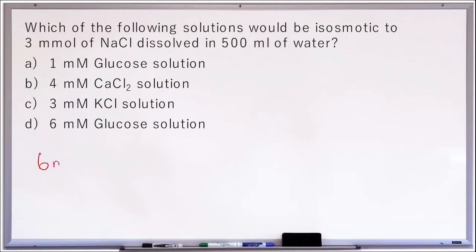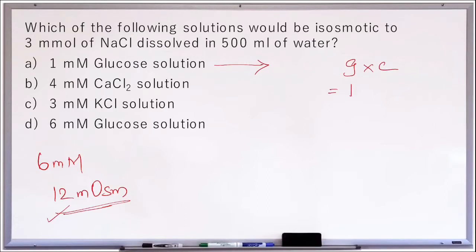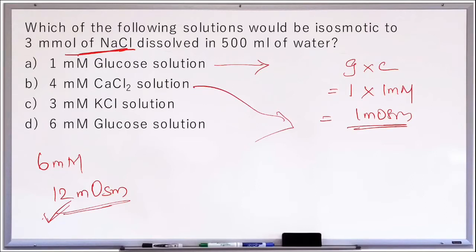The given solution is 6 millimolar with 12 milliosmoles strength. Now let's calculate the strength of all solutions. For 1 millimolar glucose: glucose does not dissociate, so G = 1, and 1 into 1 millimolar gives 1 milliosmole — hyposmotic compared to 12. For 4 millimolar calcium chloride: calcium chloride dissociates into 3 particles, so 3 into 4 gives 12 milliosmoles — isosmotic to the sodium chloride solution.